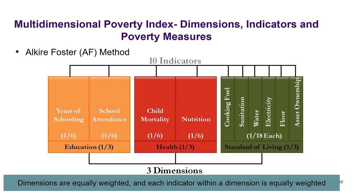Under education I have two indicators, so one third divided by two gives one sixth each. Same for health — two indicators, so one sixth as weight for each indicator. Under standard of living I have six indicators, so one third divided by six gives one eighteenth for each indicator. The weightage is very important. Within the MPI we have given equal weight of one third to each dimension, and equal weighting for the indicators as well.